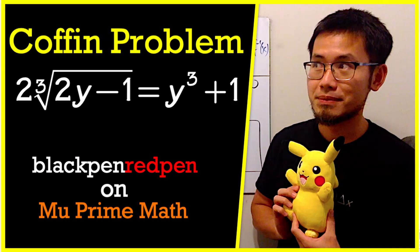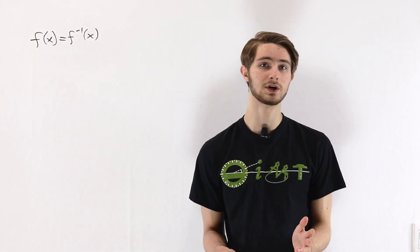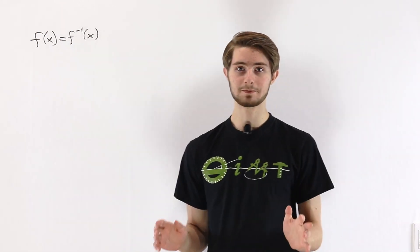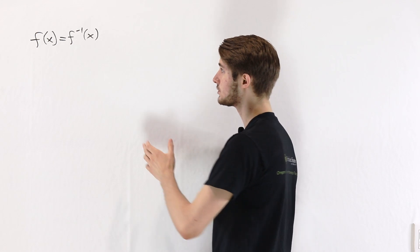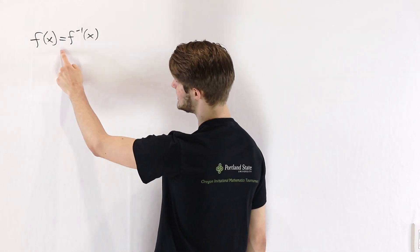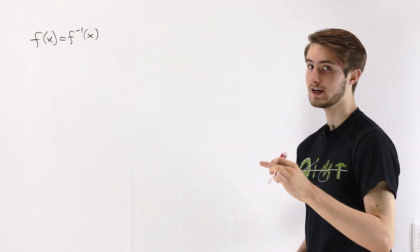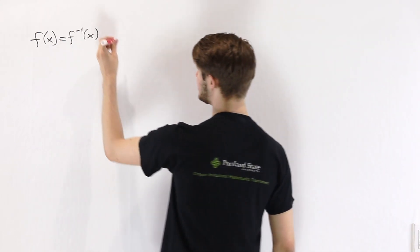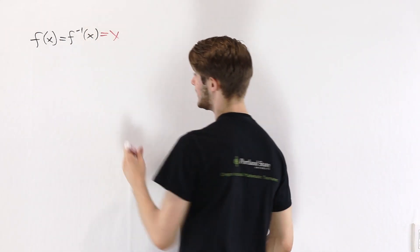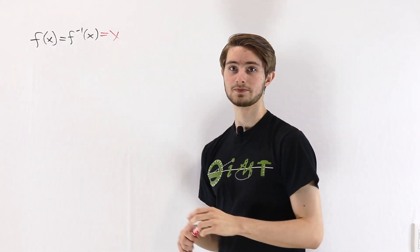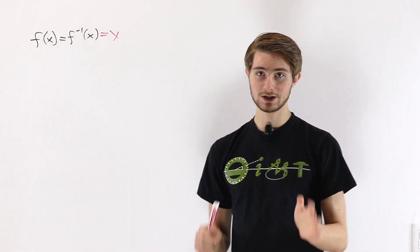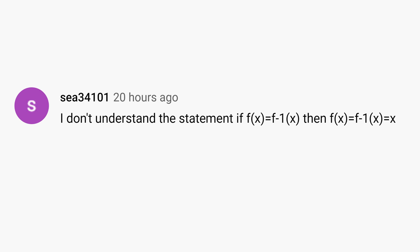This video is a follow-up to Black Pen Red Pen's video on this channel about one of the coffin problems. If you haven't watched that video yet, I'd recommend checking the link in the description. In Black Pen Red Pen's solution, one of the steps got us to an equation of the form f(x) = f⁻¹(x), and from there, Black Pen Red Pen made the step that f(x) must also equal x. There were a few people who had questions about this, because it seems like there are some cases where this step does not actually work.